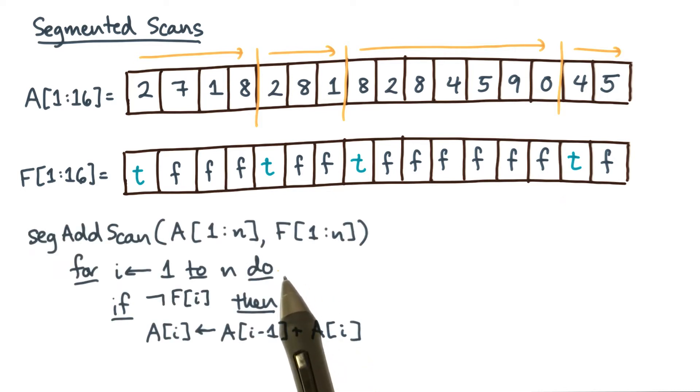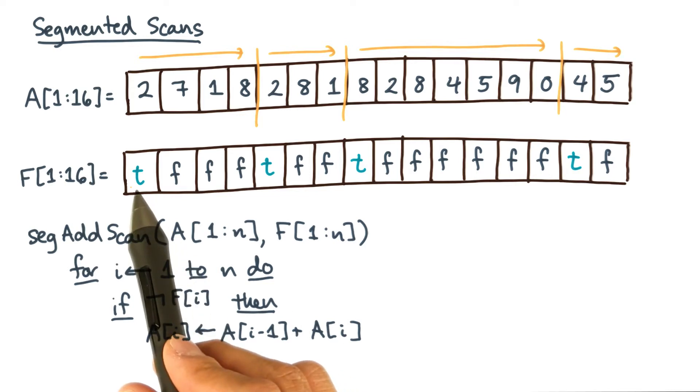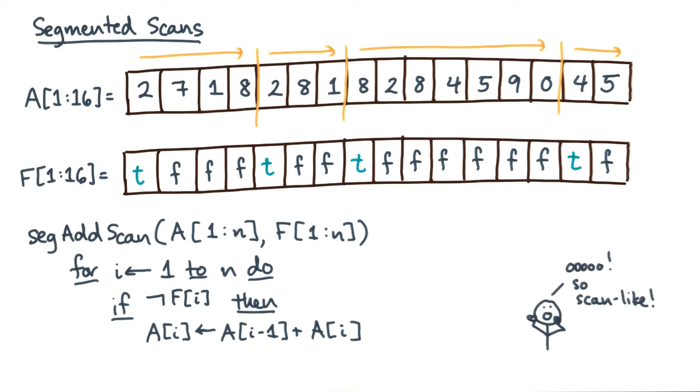Were you doing things sequentially, you might use the following algorithm. The algorithm iterates over all elements and looks at the flag array. If the flag is set, meaning it's true, then the algorithm does nothing, basically leaves the value a sub i alone. Otherwise, it does a scan. This computation looks tantalizingly like a scan, except for this pesky conditional check.